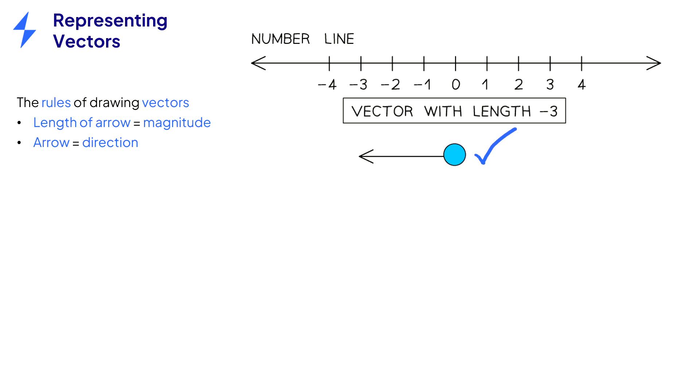Now we have a vector of magnitude 3 in the negative direction. With an incorrect example below, this is also in the negative direction but with a magnitude of 1 and not 3. Always draw vectors with a ruler.